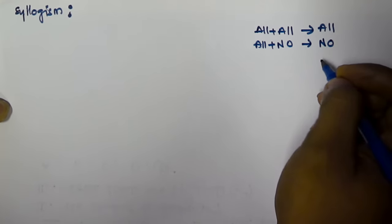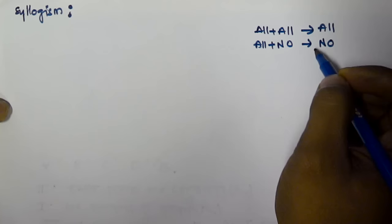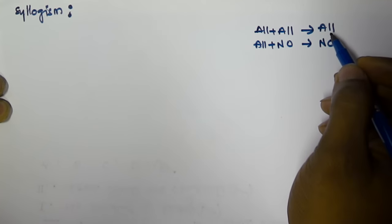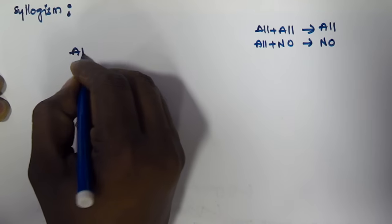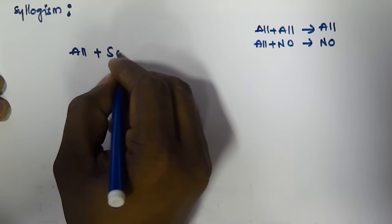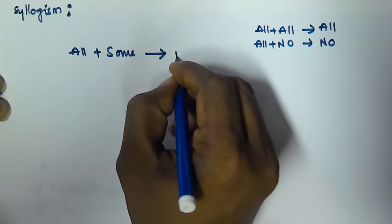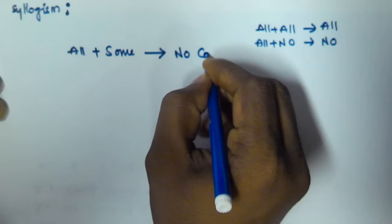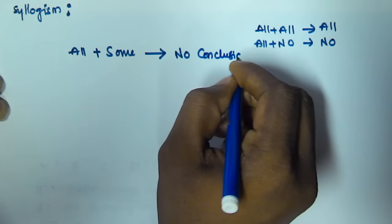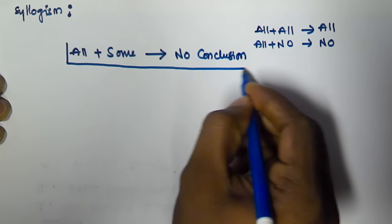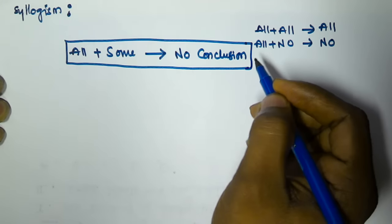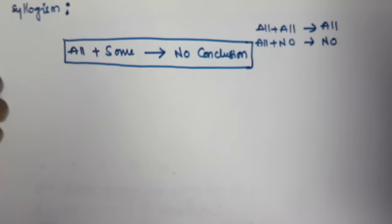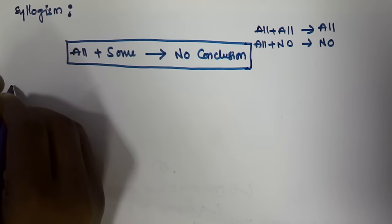So in the previous four videos we have seen these two rules. In this video we will see another rule to solve the syllogism problem. The rule is: all plus some will give no conclusion.